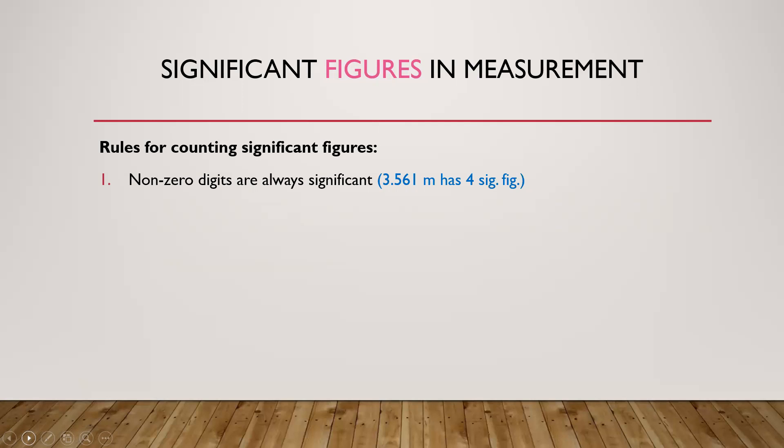Rule number 2: Zeros between non-zero digits are significant. For example, 305 kilograms has 3 significant figures.